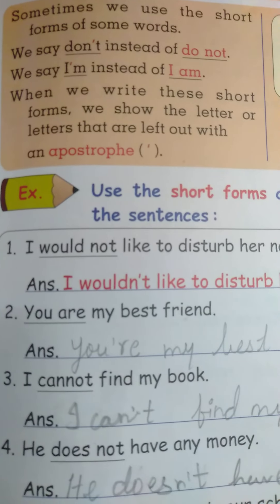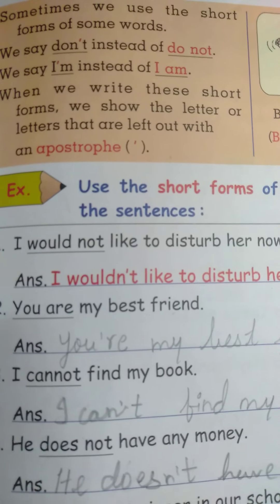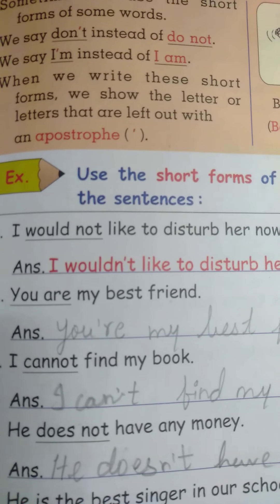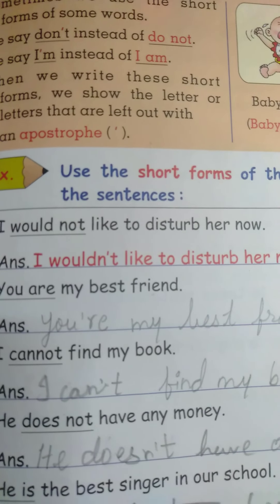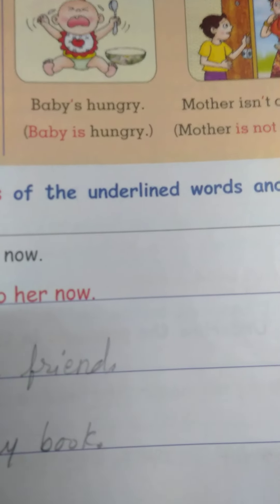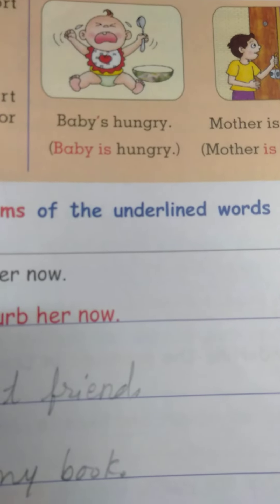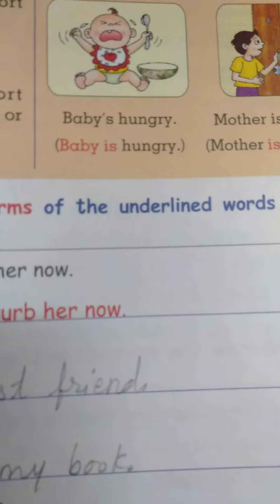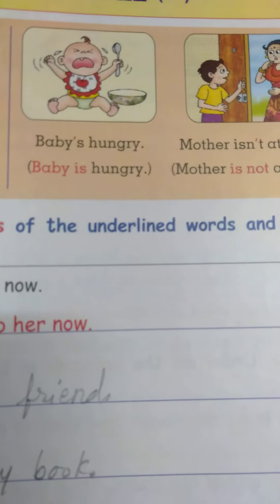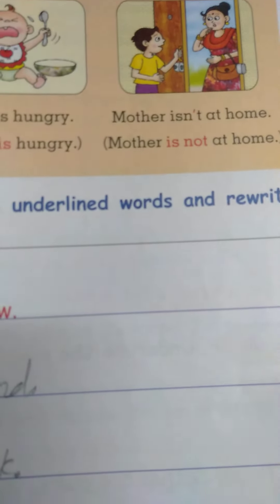For example, we say 'don't' instead of 'do not', and 'I'm' instead of 'I am'. When we write these short forms, we show the letter or letters that are left out with an apostrophe. In short form, 'baby is hungry' becomes 'baby's hungry' — after baby, apostrophe and then S. Mother is not at home becomes 'mother isn't at home'. Isn't means is not.